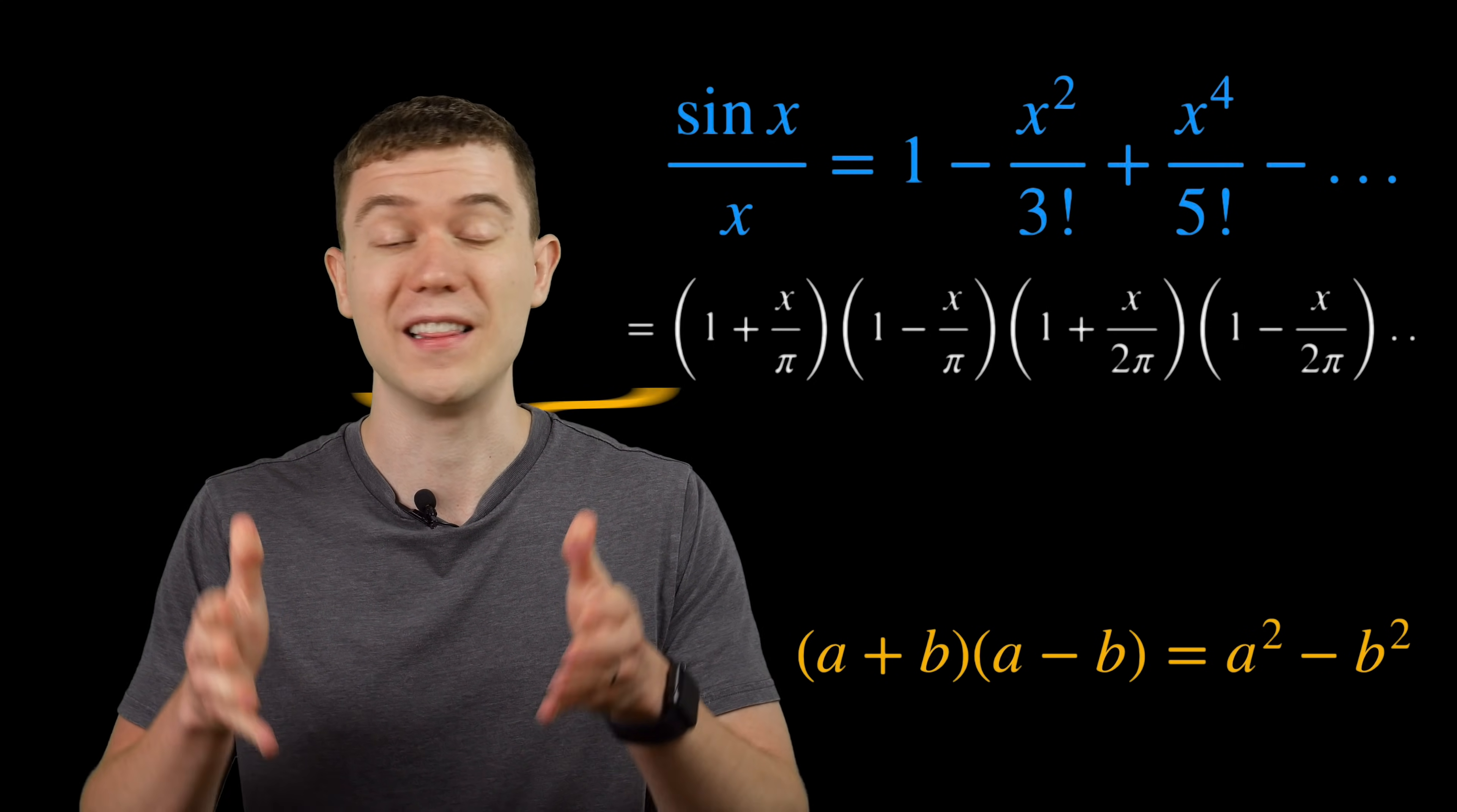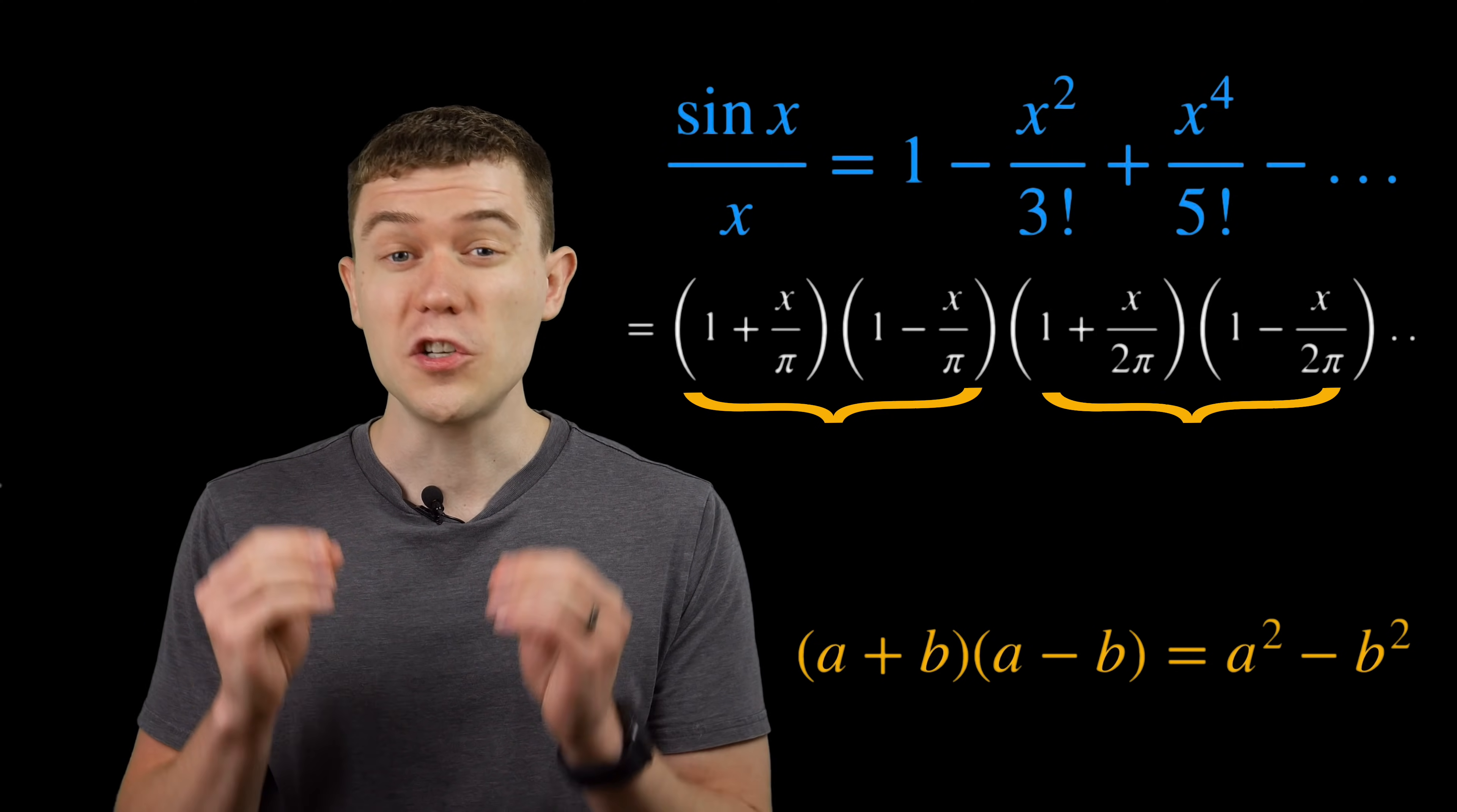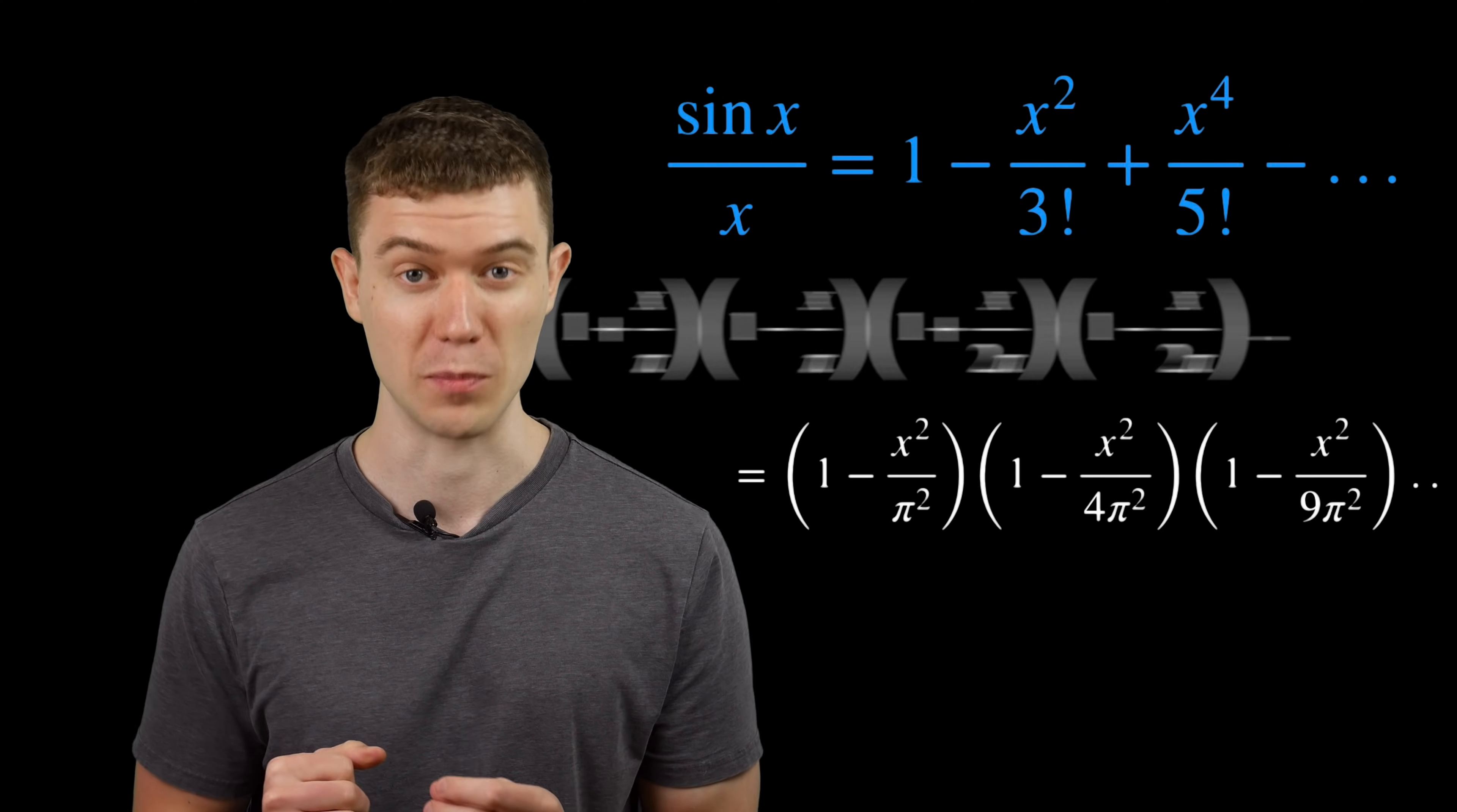If you're up to date on your factoring formulas, you may notice that this is factored into a bunch of difference of squares. So each pair we can combine into 1 minus x squared over the root squared, and we have another factorization representation.